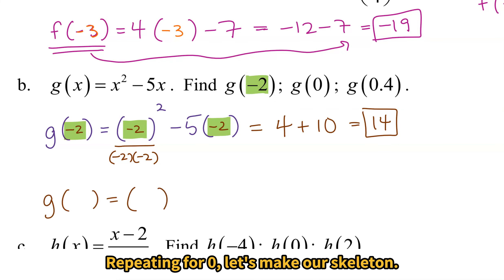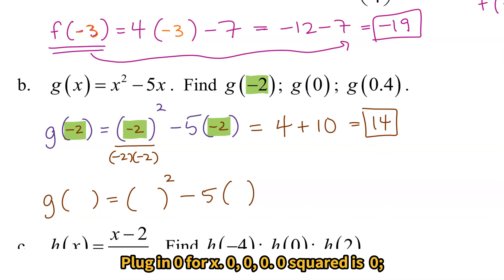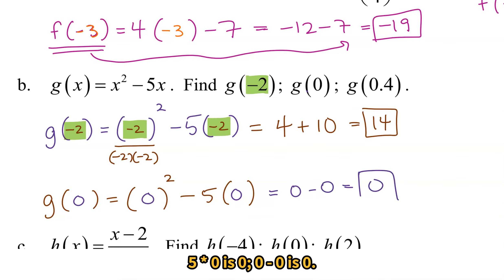Repeating for 0, let's make our skeleton. Plug in 0 for x. 0, 0, 0. 0² is 0. 5 times 0 is 0. 0 - 0 is 0.